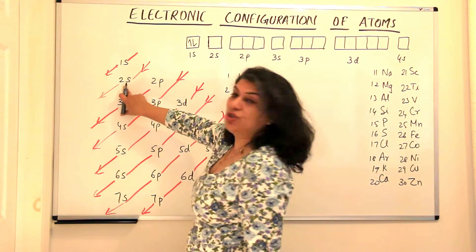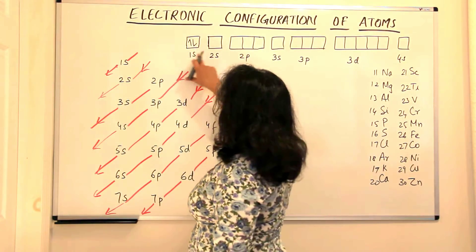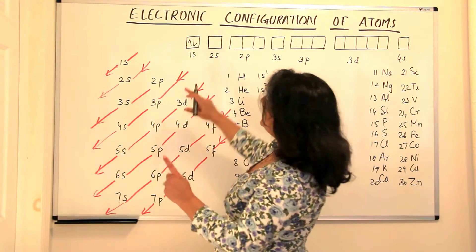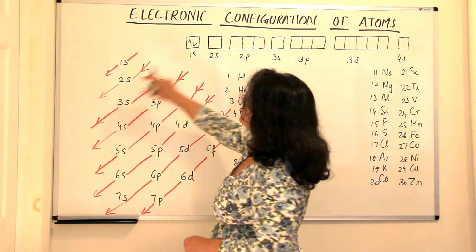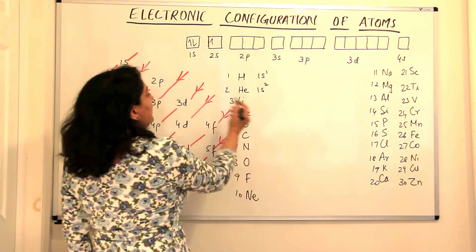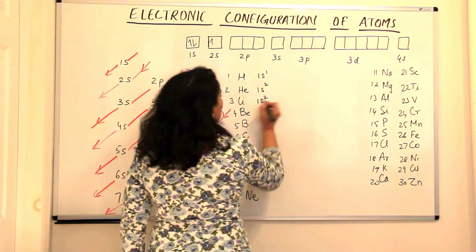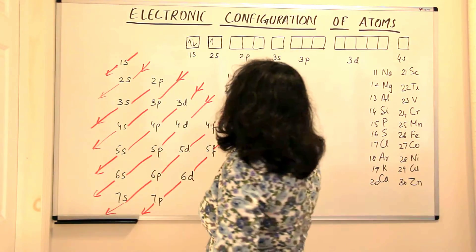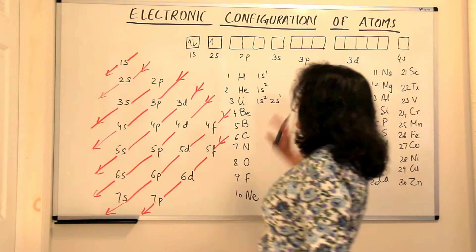Next is lithium. Lithium has three electrons. So now the 1s shell has been filled up. The next in the sequence is the 2s orbital. So the third electron, the first two would move to 1s, but the third electron would move to the orbital 2s. So lithium would have a configuration 1s2, 2s1. In the 1s orbital, it has two electrons and in the 2s orbital, it has one electron.